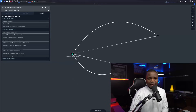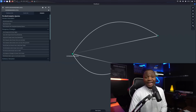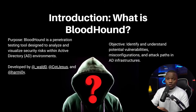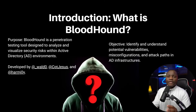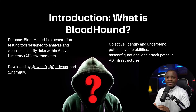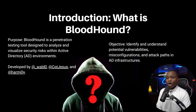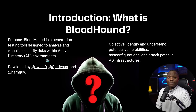Welcome to IT Security Labs. Today we're going to be learning about BloodHound and how we can use it to enumerate an Active Directory domain. This tool is to be used by pentesters or red teamers who want to find out information about an Active Directory environment. It can also be used by defenders who want to find out how to best secure their AD environment. Our objective is to identify potential vulnerabilities, misconfigurations, and find attack paths.